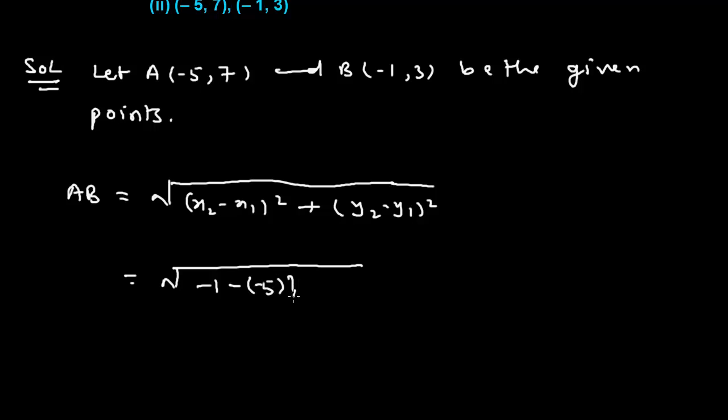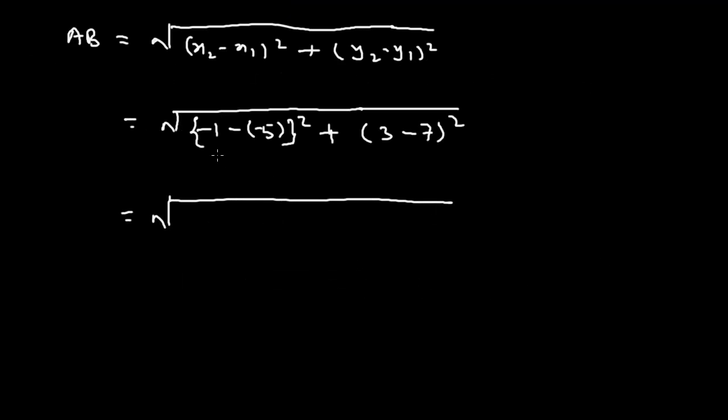Plus the whole square of this value. Y2 is 3, y1 is 7, so we shall find the whole square of 3 minus 7.